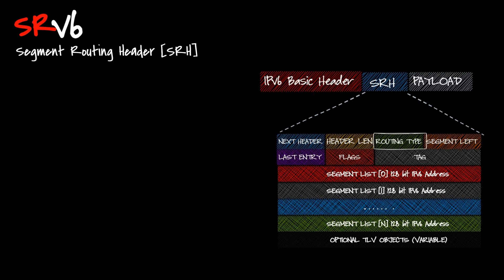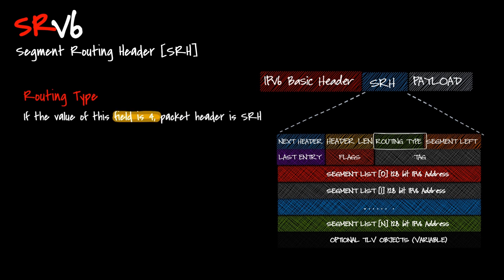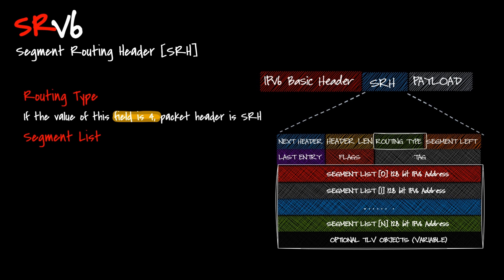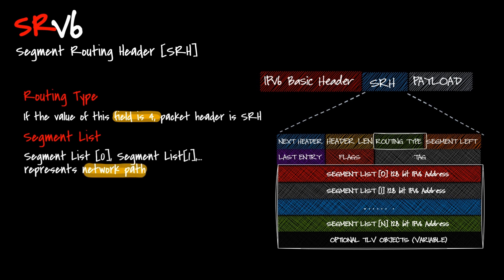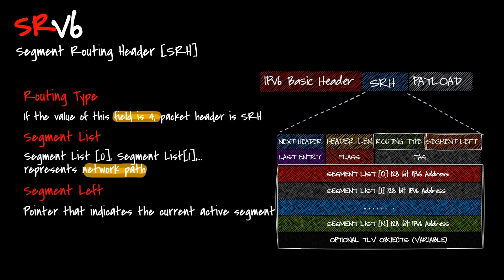Key information in the IPv6 SRH: the routing type field — if its value is 4, the packet header is an SRH. The segment list (segment list 0, segment list 1, segment list 2) represents the network path information. The segment left, or SL, is a pointer that indicates the currently active segment.